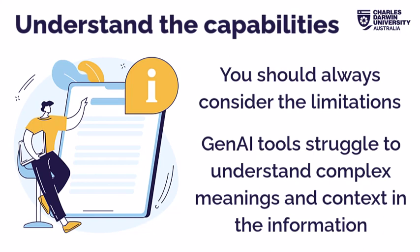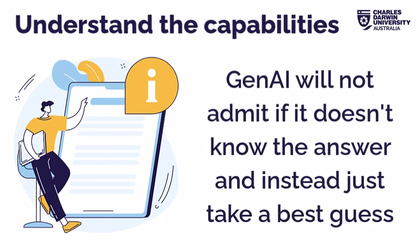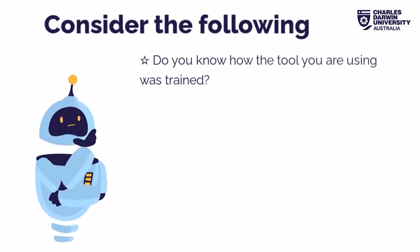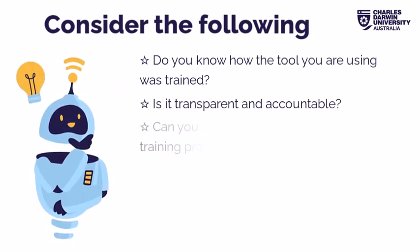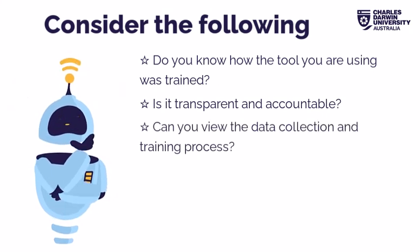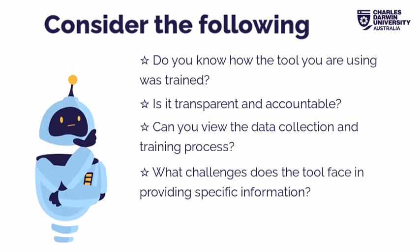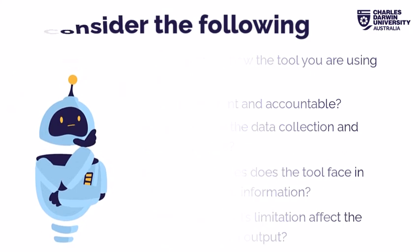For example, Gen AI tools struggle to understand context or complex meanings in the information. If they don't understand, they'll never admit they don't know the answer and just take their best guess. You may like to pause here and consider: do you know how the tool you're using was trained? Is it transparent and accountable? Can you view the data collection and training process? What challenges does the tool face in providing specific information? How does the tool's limitation affect the reliability of Gen AI output?